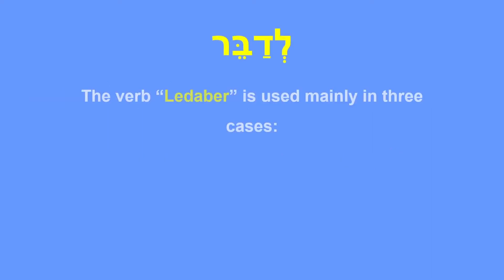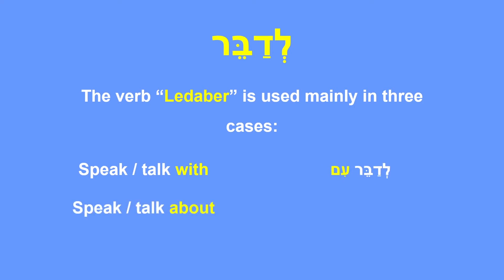If you remember, the verb Ledaber is used mainly in three cases: when we're talking or speaking with someone, and the preposition that we will use is Im; when we're speaking or talking about something or someone, and the preposition is Al — Ledaber Al; or when we are speaking a language — Ledaber Safa. Also, Ledaber will be used when we are engaging in a conversation. It is an extended action that you are doing with another person, so Ledaber is a verb of conversation engagement.